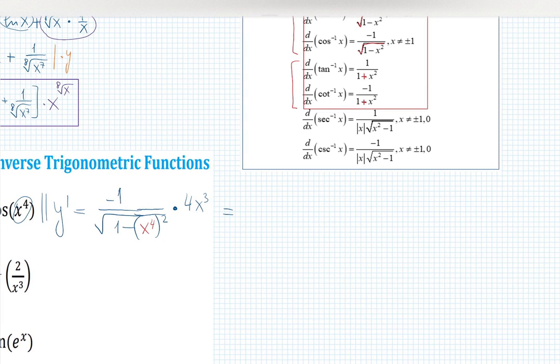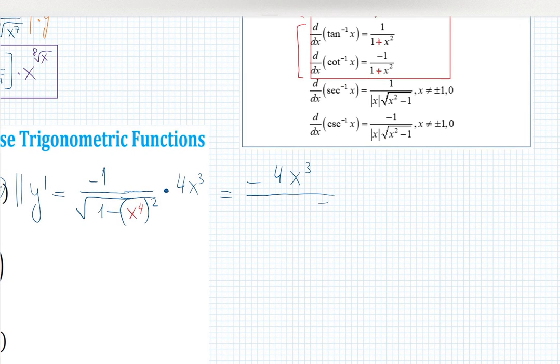The answer becomes negative 4x³ in the numerator and then square root 1 minus x to the 8 in the denominator. Does this make sense? Not too bad if you do it carefully step by step. If you lost a piece please watch carefully and see where the mistake could happen.